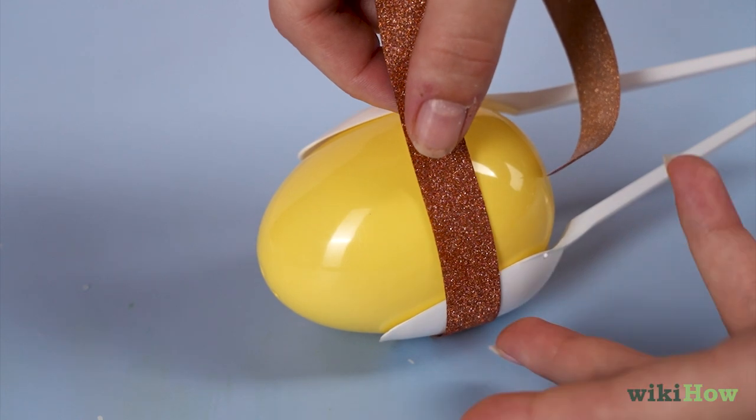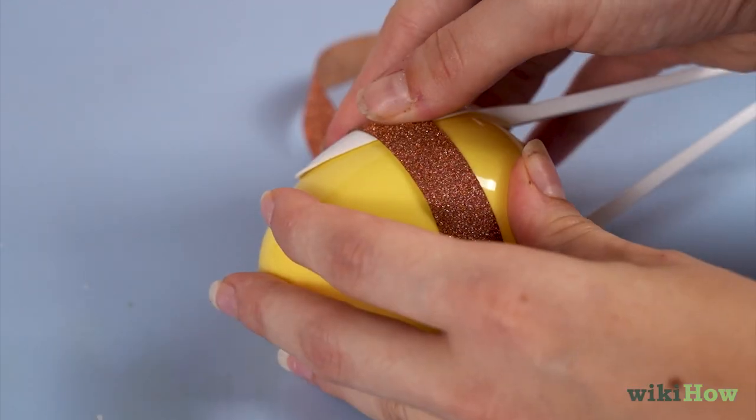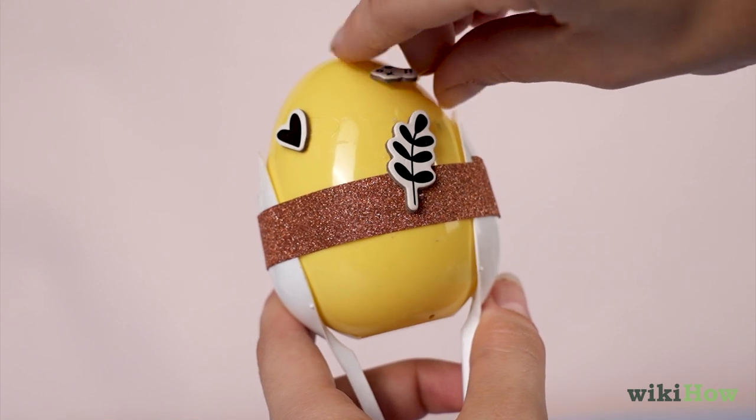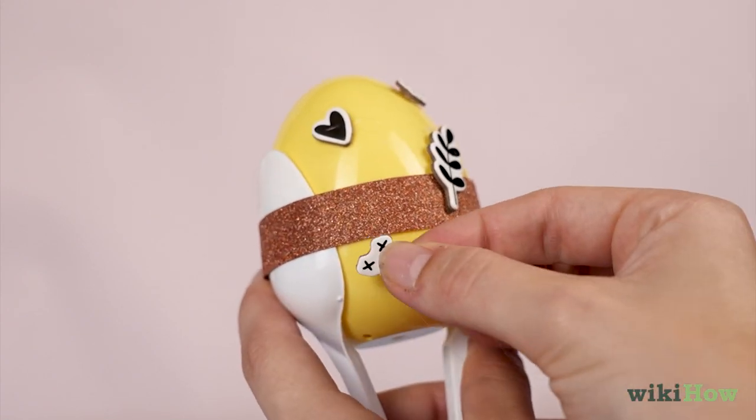Secure the maracas by wrapping washi tape around both spoons and the egg. You can also decorate the maracas with paint or stickers.